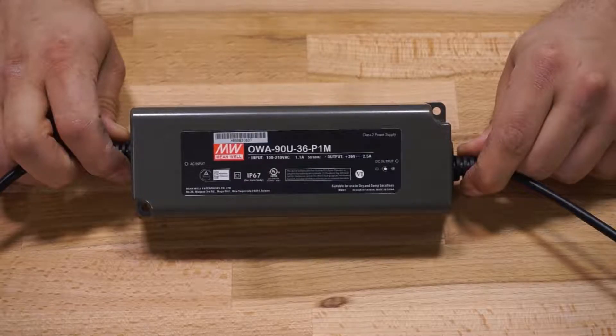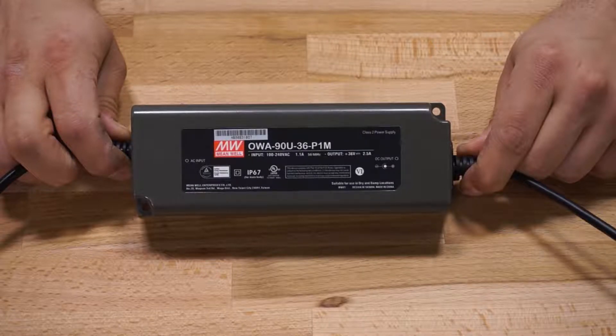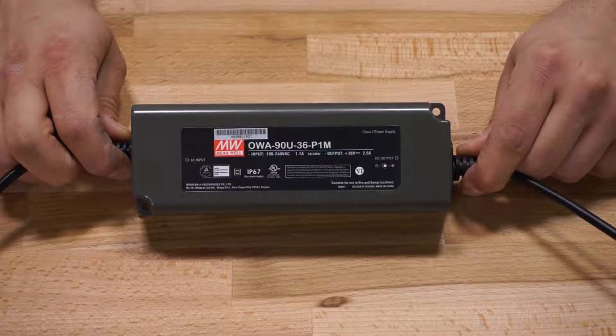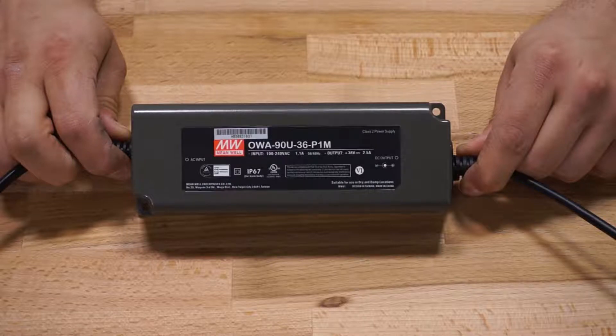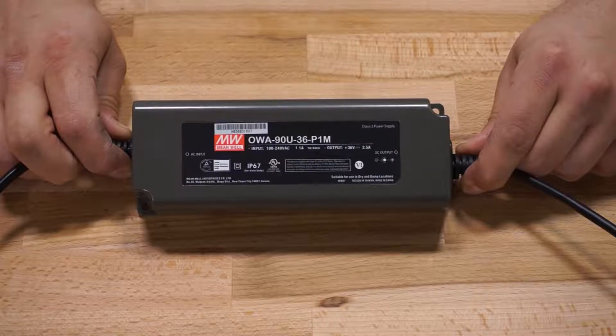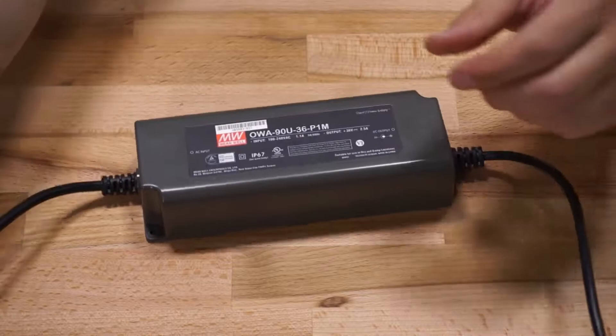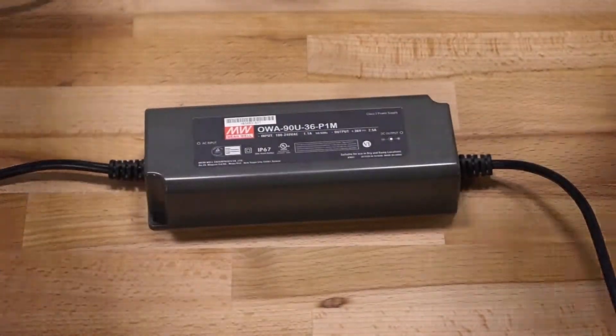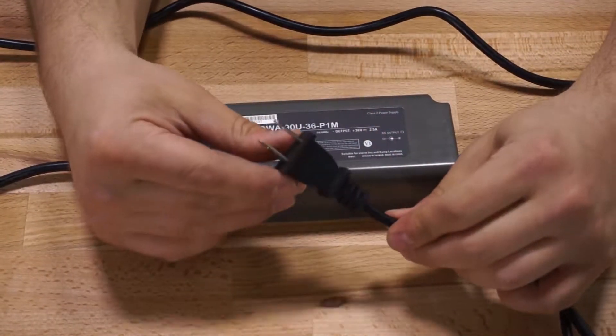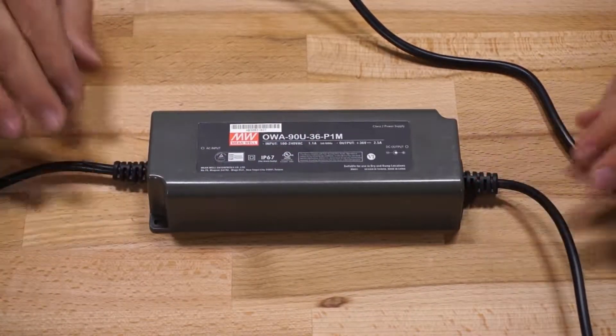The driver that you get in this kit is a Meanwell OWA 90U36P1M, that's a mouthful, constant voltage plus constant current driver, and it outputs 2.5 amps at 36 volts with about 91% efficiency. As mentioned, the driver comes pre-terminated on both the DC output and the AC input side. The DC output side has a small barrel connector on it and is about a foot long, whereas the AC side has a two prong AC connector on it, and that cable is about five feet long.